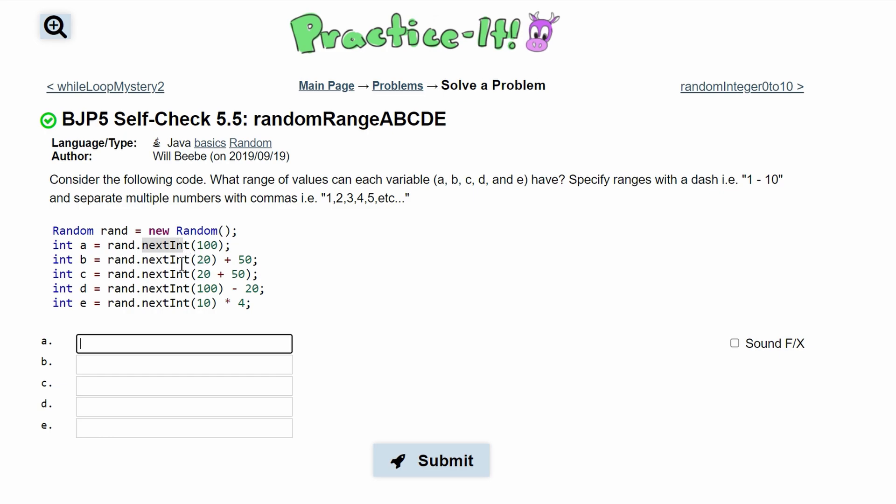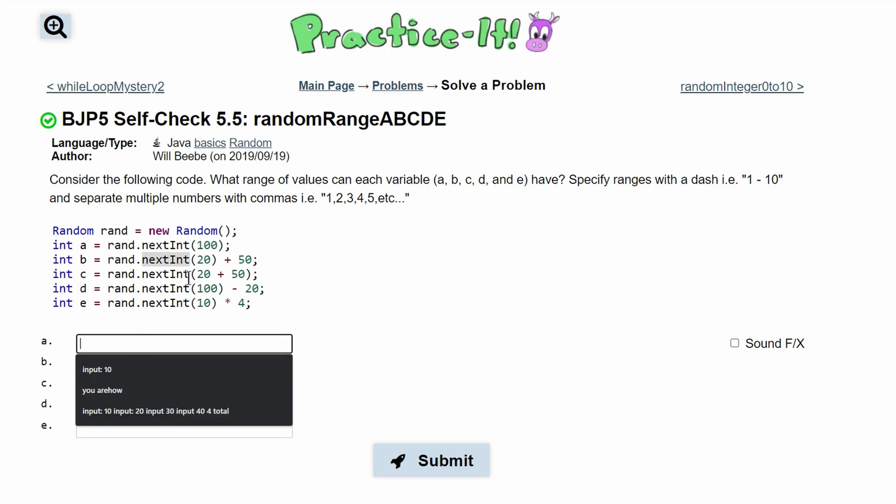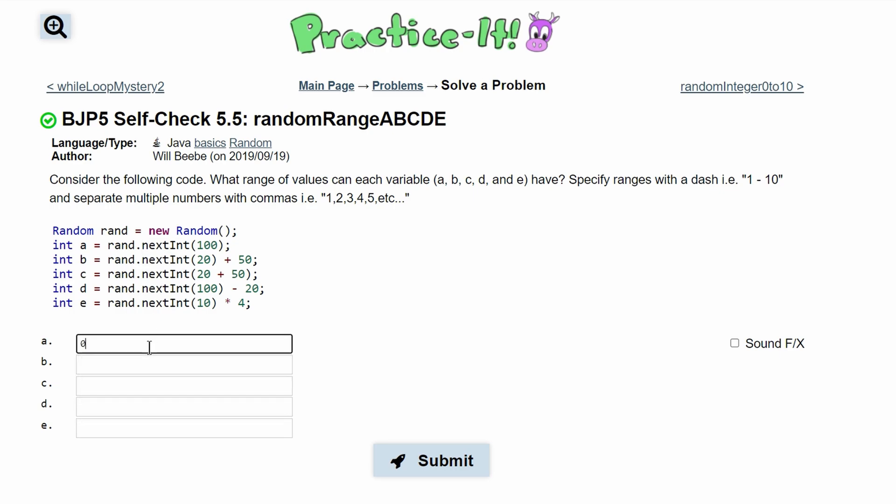And automatically it's standard that we go from zero to something, and this something is whatever is in here. So we're going to go from zero to 100, but we're not going to touch 100. So we're really going from zero to 99. We go one less than what's in here.